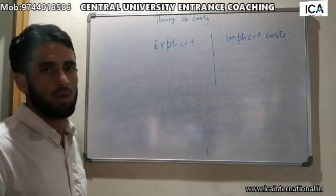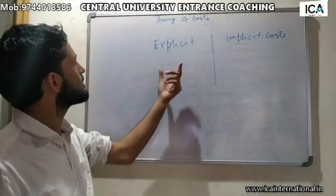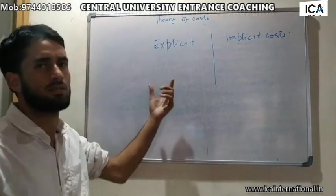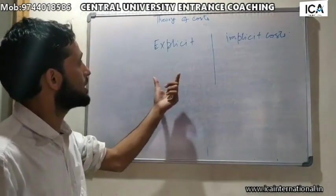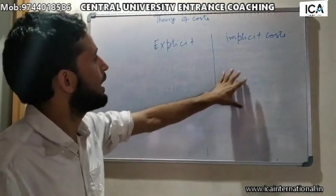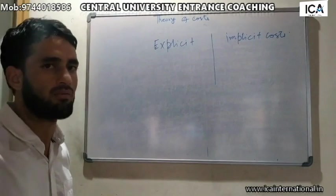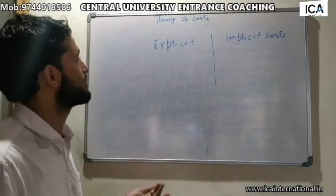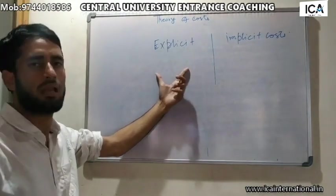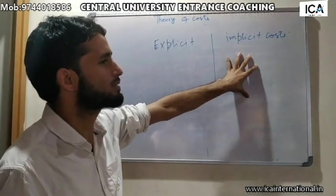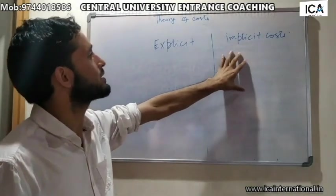We have the concept of explicit costs and implicit costs. In case of explicit costs, these are the costs incurred by the producer for factors of production which he purchased from others. And in case of implicit costs, these are the costs on the factors of production which a producer owns by himself. For example, in case of explicit costs, if a producer purchases labor; and implicit costs would be if a producer owns machinery or his own land.